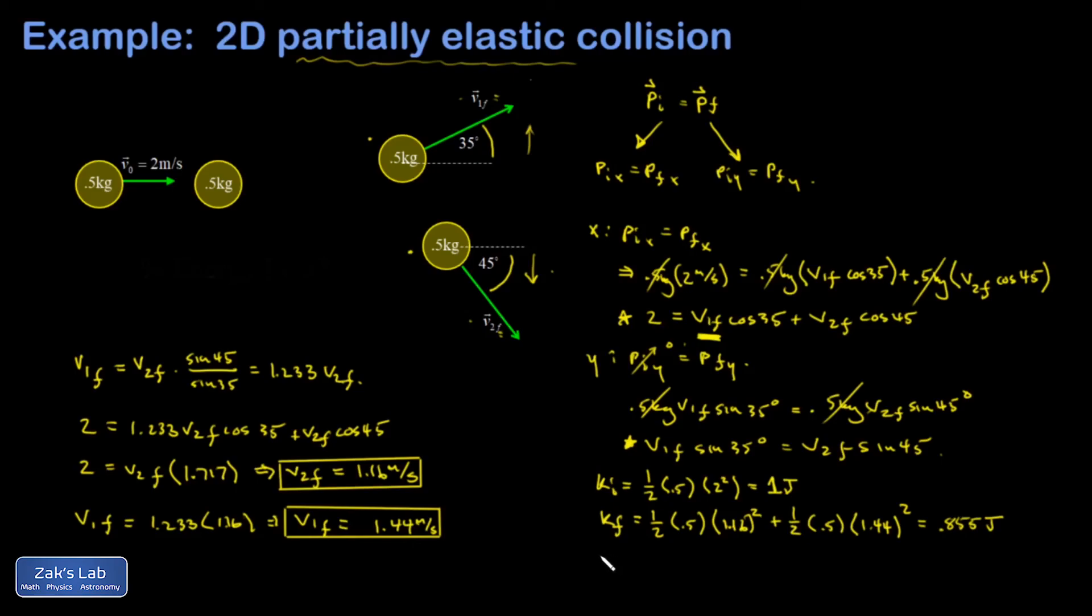What's the total amount lost? Do a little subtraction problem. It's 0.145 joules lost. Another way to say that is that it was 14.5% because the original amount was only one. 14.5% of the original amount of energy was lost.